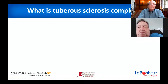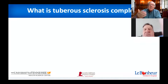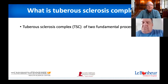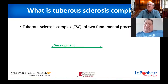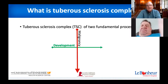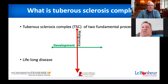I always like to start with this slide: What is tuberous sclerosis? An easy way to keep it straight is to say it's a disease at the crux of two truly fundamental processes. One is human development — embryonic and fetal development — how do you become a human? And after you're a human, the same bits of machinery are involved in the process of cancer and malignancy. TSC sits right at the crossroads of both and is involved in this truly lifelong disease process.